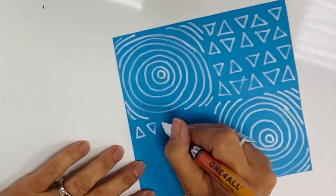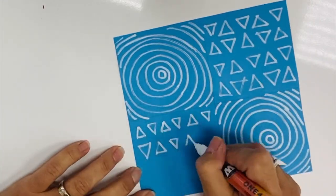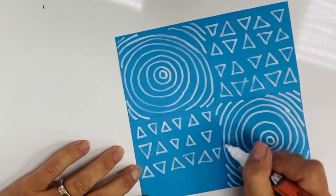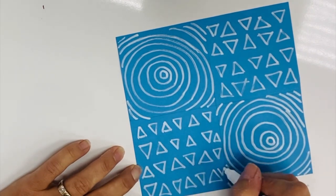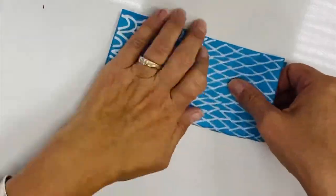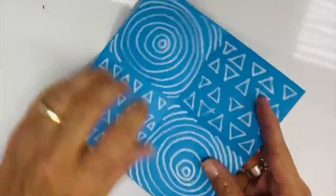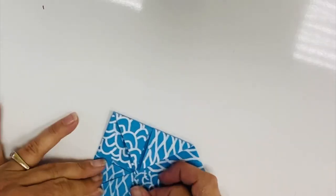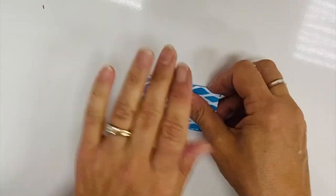White Posca marker, acrylic pen, or even white charcoal pencil works really well on blue. Conversely, on white paper you will want to use one of the light or dark blue Posca or acrylic markers.